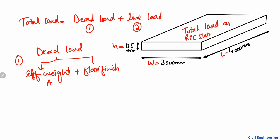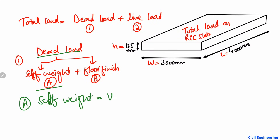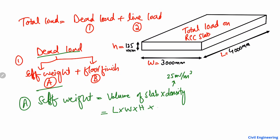We are going to start first of all with the dead load and the self-weight. To find out the self-weight of the slab, you simply multiply the volume of the slab by the density of the concrete used. The density of reinforced concrete is a known value which is 25 kilonewton per cubic meter.